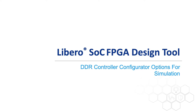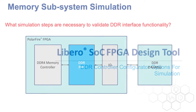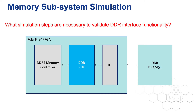This presentation will cover options to select when simulating a memory subsystem in the PolarFire FPGA. Simulation plays a major role in validating a design before committing it to hardware. In the case of a design with external DDR memory, the DDR interface must be established before the memory subsystem can operate normally. These steps can be very time-consuming to simulate, so it must be determined if there is value in simulating the initialization of this interface.